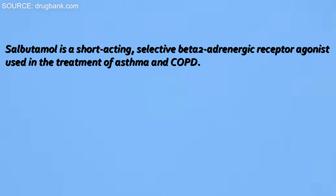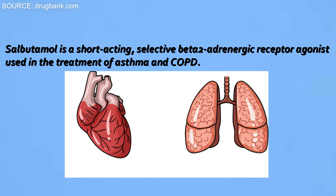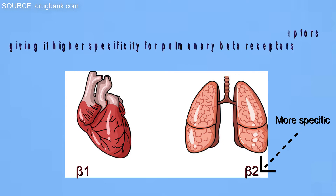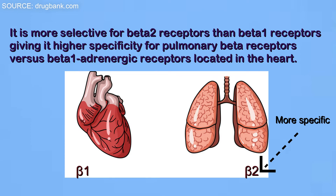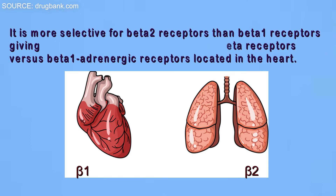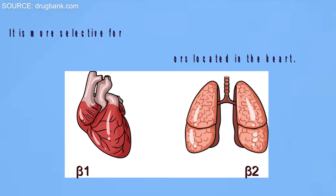Salbutamol is a short-acting selective beta-2 adrenergic receptor agonist which is most commonly used in the treatment of asthma and COPD. Since salbutamol is a beta-receptor agonist, it can act on both beta-1 and beta-2 receptors simultaneously. But it is more selective for beta-2 receptors than beta-1 receptors, giving higher specificity for the pulmonary beta-receptors than the beta-1 receptors, i.e., the receptors located in the heart. Salbutamol is formulated as a racemic mixture of the R and S isomers.